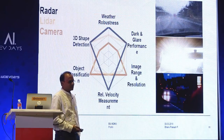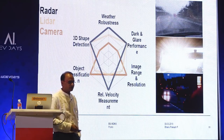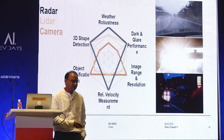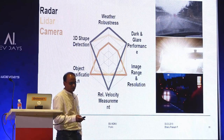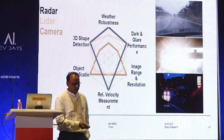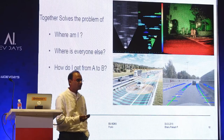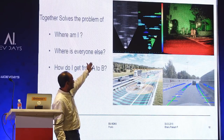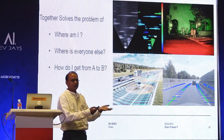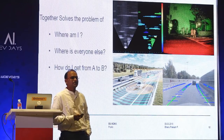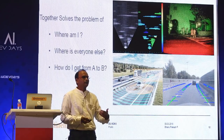In weather conditions, camera performs poorly in rain, glare, and night, whereas other sensors like radar do better. Looking at sensor outputs: the first quadrant shows radar output, next is LIDAR, and below is the camera output doing lane centering and other tasks. Effectively all these sensors together solve the problem of where am I, how is everyone else placed, and how do I get from point A to point B.